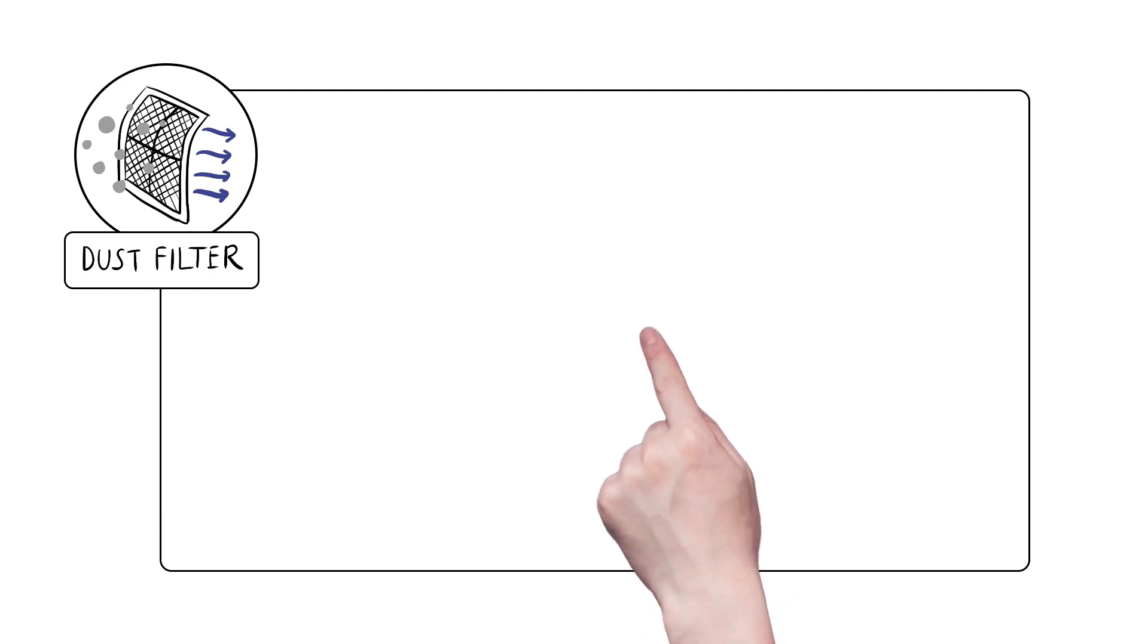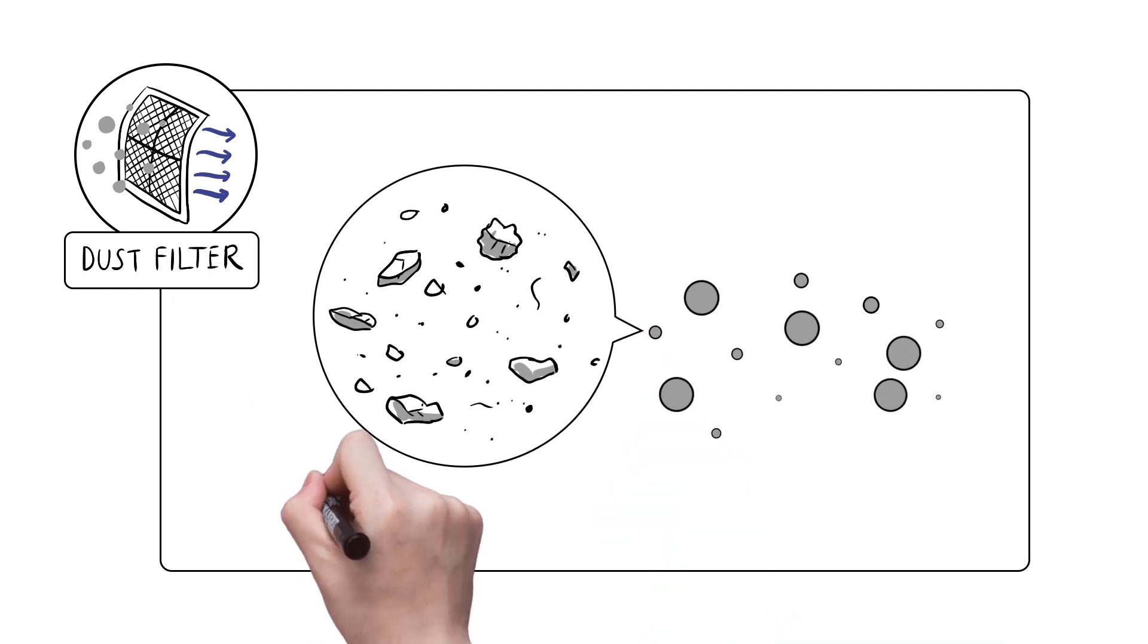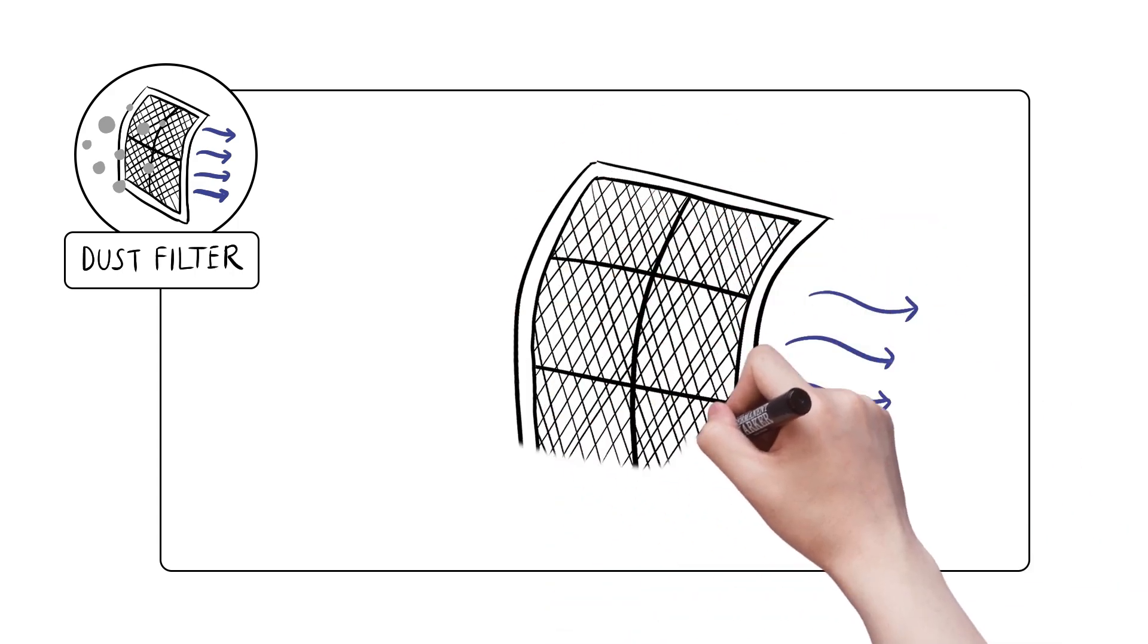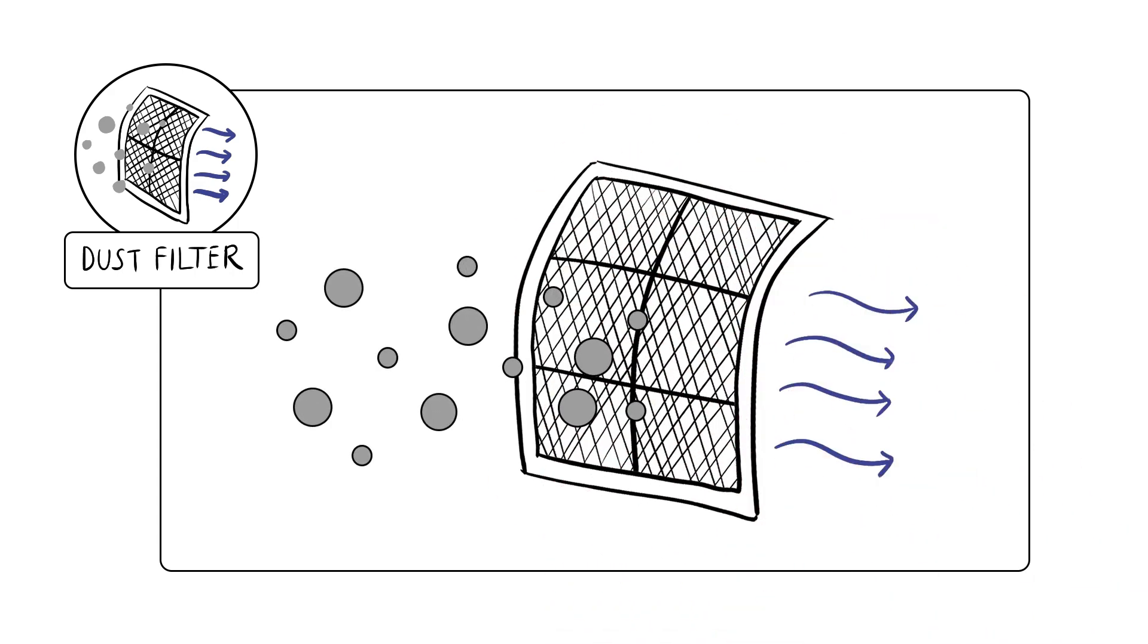1. Dust filters. Dust filters trap small harmful dust particles in the filter by forcing air through a fine mesh, filtering the air as it goes through the air conditioning unit.